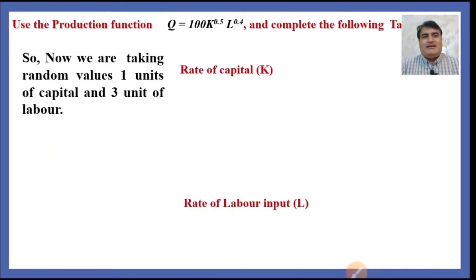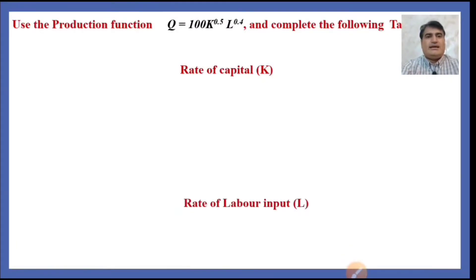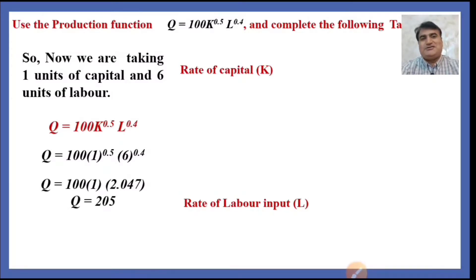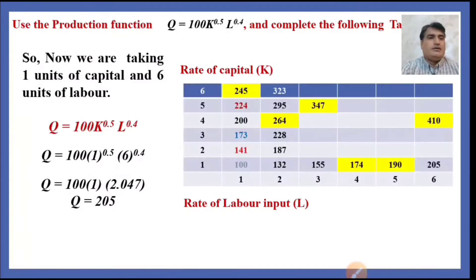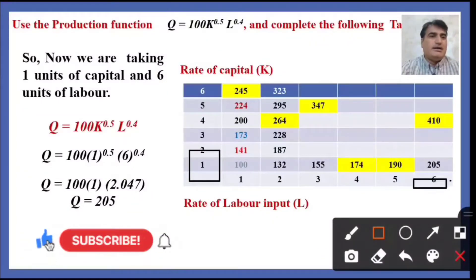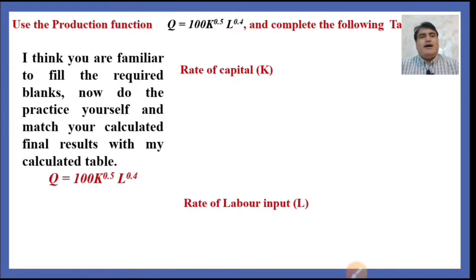Now taking 1 unit of capital and 3 units of labor and using the same production function, the output the producer will receive is 155 units. With 1 unit of capital and 6 units of labor, using the production function, the producer is going to receive 205 units of output. I think you are now familiar with how to fill the required blanks — do the practice yourself and compare your results with my completed table.